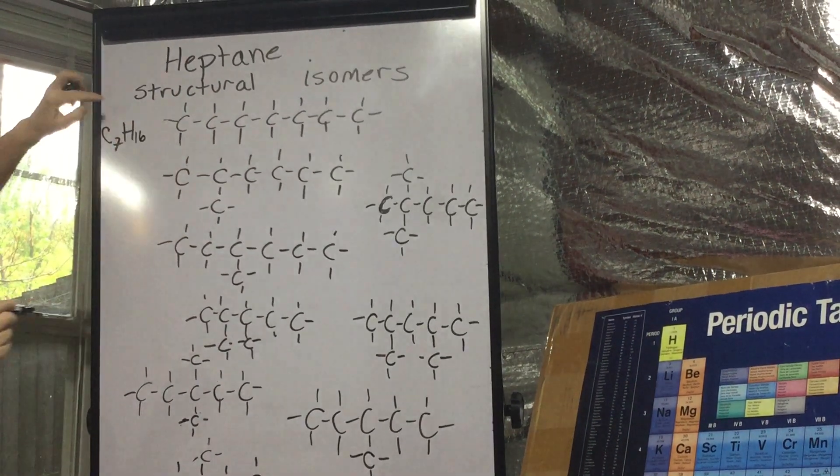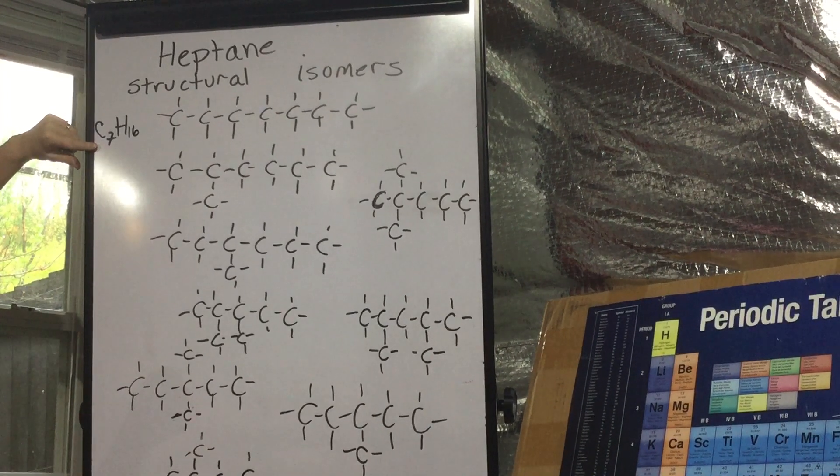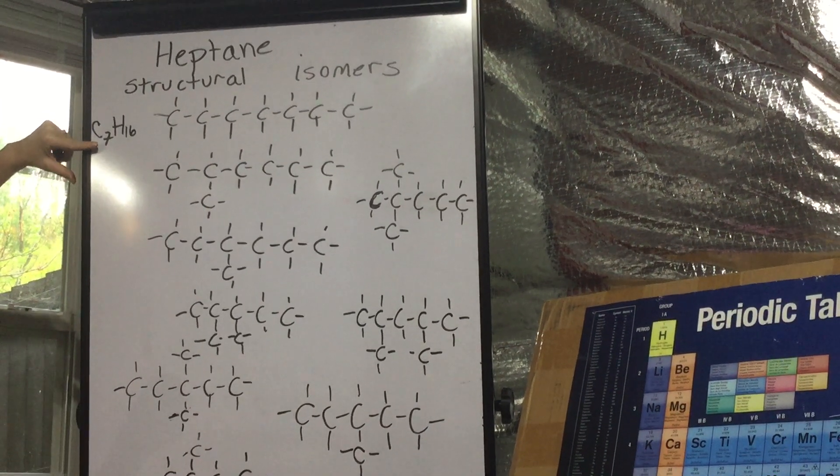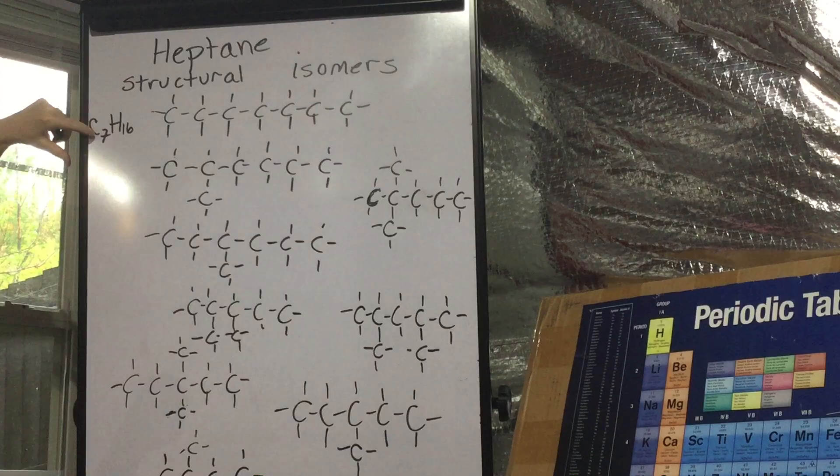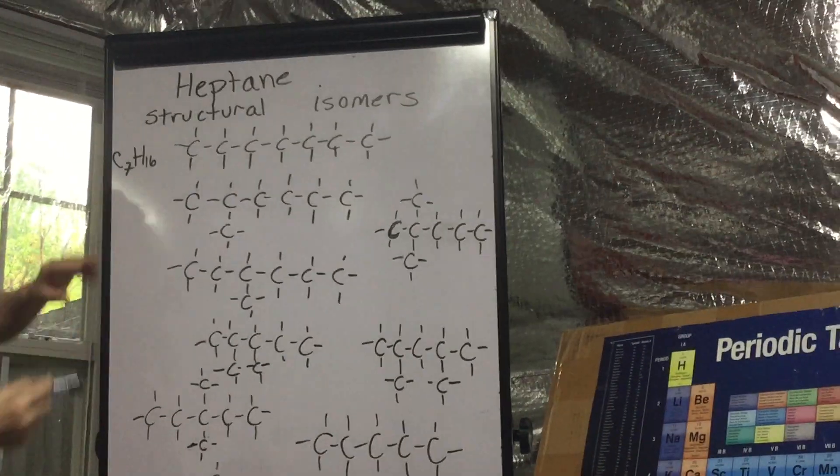In fact, alkanes, these simple alkanes, have a formula CnH2n+2. So C is 7, 2 times 7, 14 plus 2. They follow that formula.